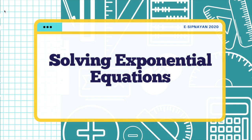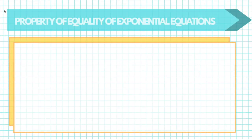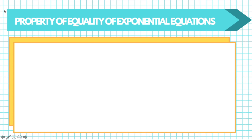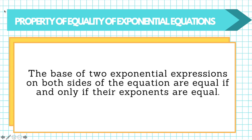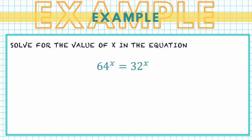Let us first try to solve exponential equations. In solving exponential equations, you have to remember the property of equality of exponential equations. This property states that the bases of two exponential expressions on both sides of the equation are equal if and only if their exponents are equal. For example, we have 64 raised to x equals 32 raised to x.